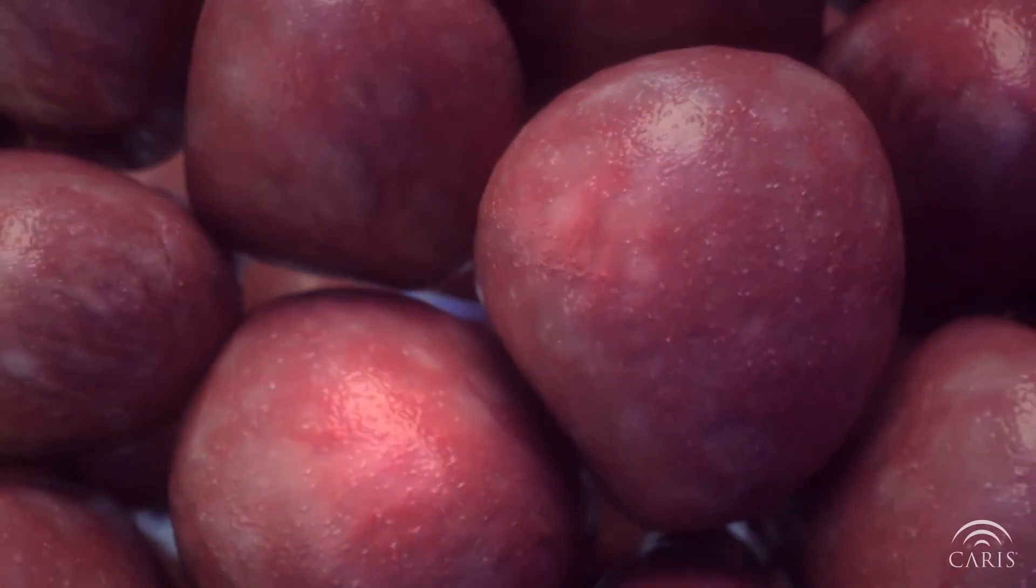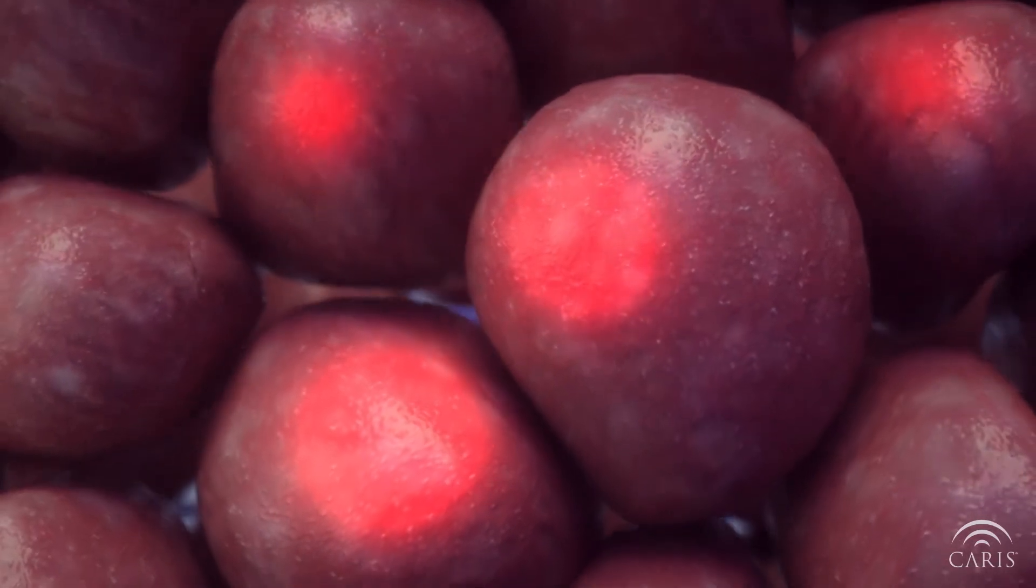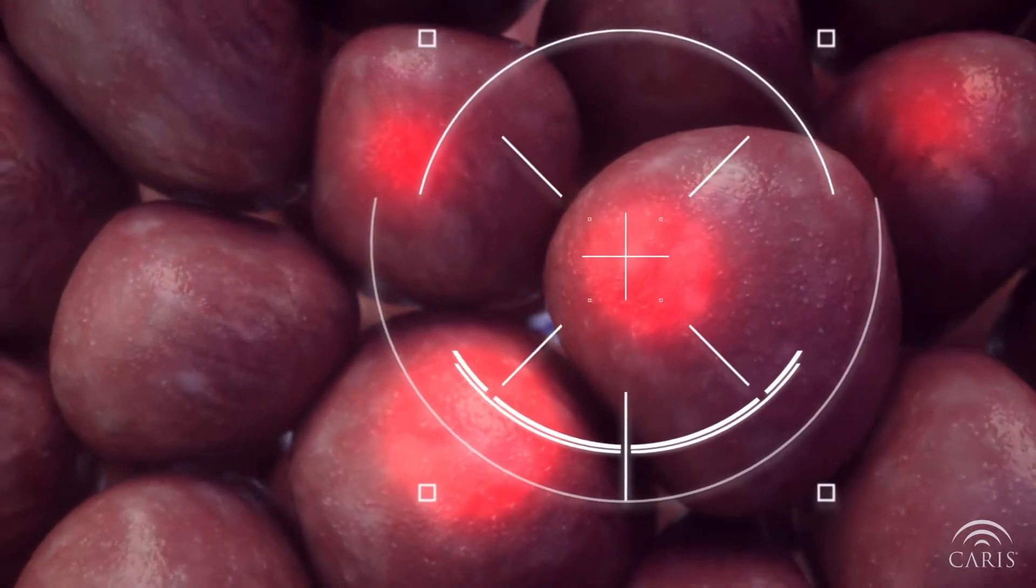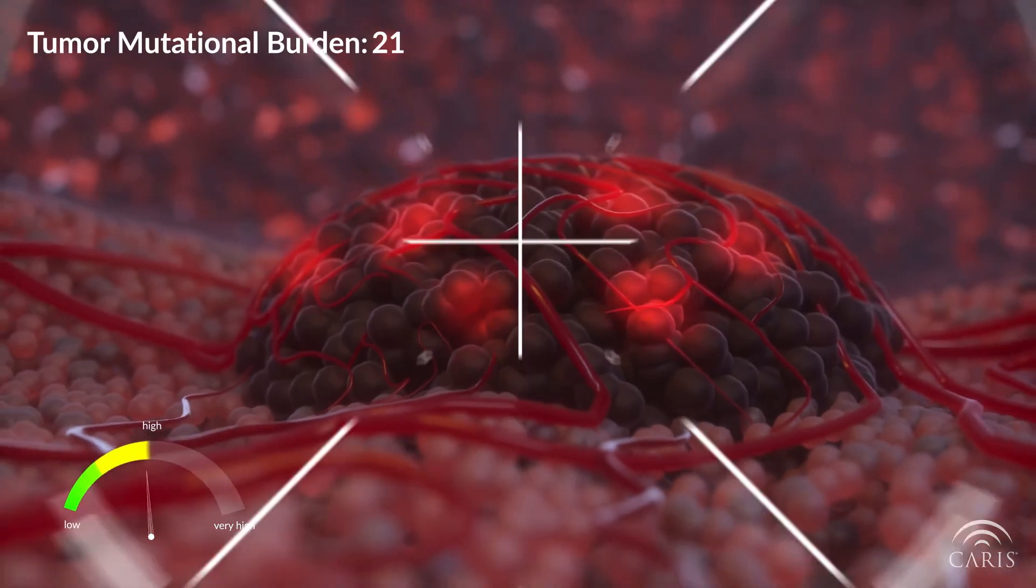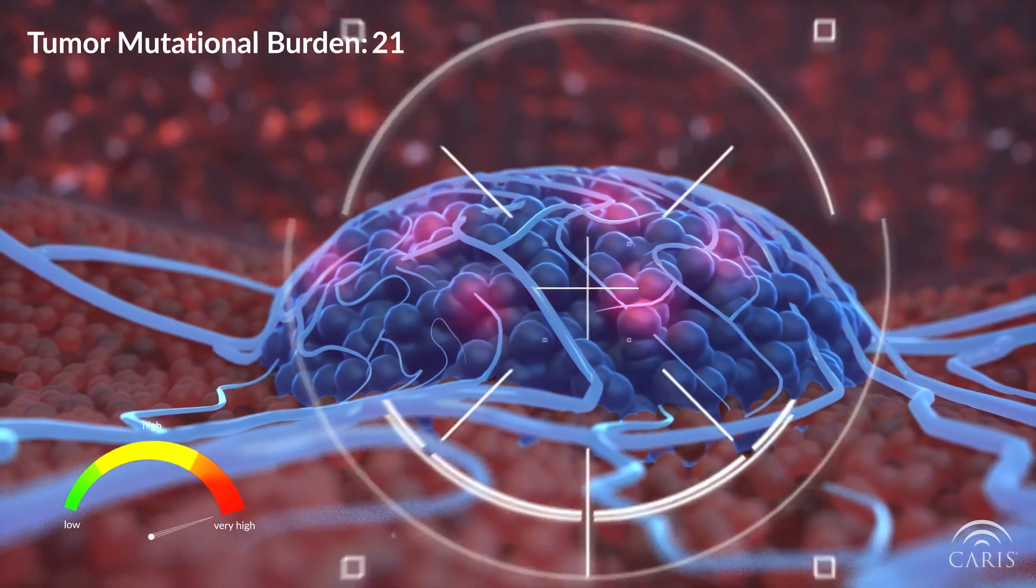For instance, cancer cells can present signals on their surface which are targets for immune cells to find and attack them. There are more of these signals for the immune system to detect in tumors with a high TMB.